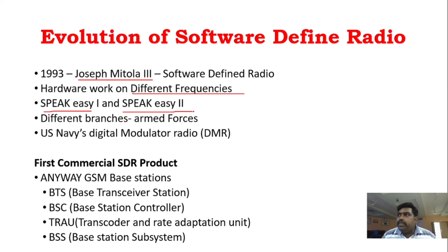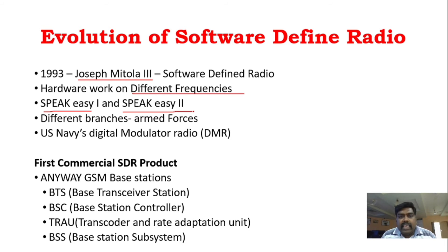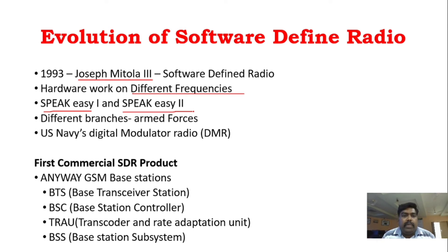SpeakEasy 2 was a more compact version, capable of achieving all the SDR processing. It was one of the first emerged SDR devices, used to communicate between different branches of the US Army armed forces.